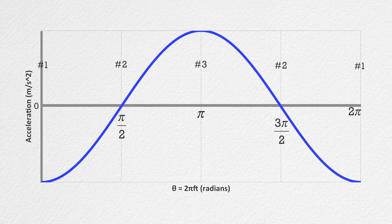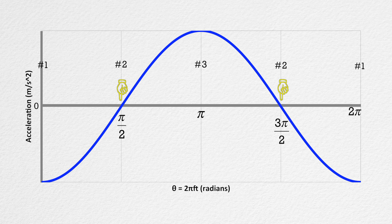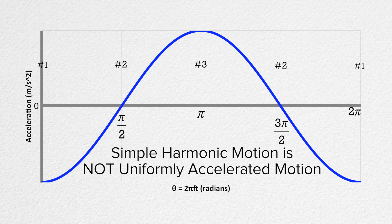Let's look at the graph of the acceleration of the mass. Again, it matches what we said before. The maximum magnitude acceleration is at the most extreme positions, positions one and three, and the acceleration is zero at the equilibrium position, position number two. It is very important to notice that the acceleration during simple harmonic motion is not uniformly accelerated motion. So you cannot use the uniformly accelerated motion equations.